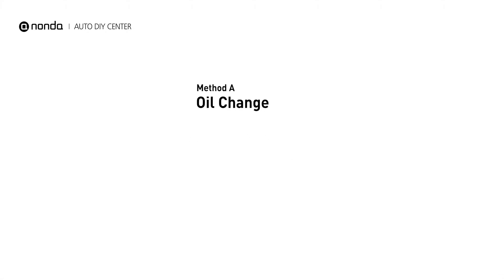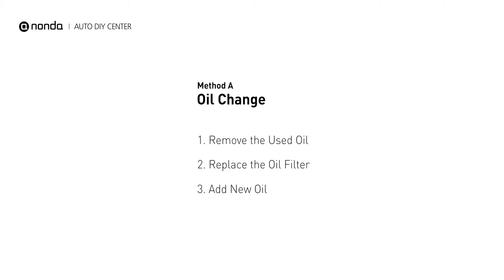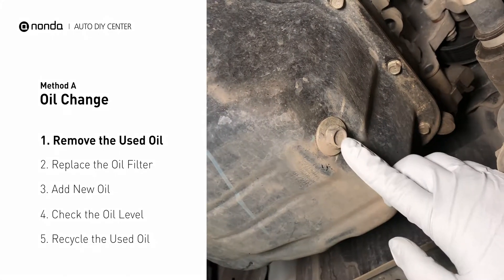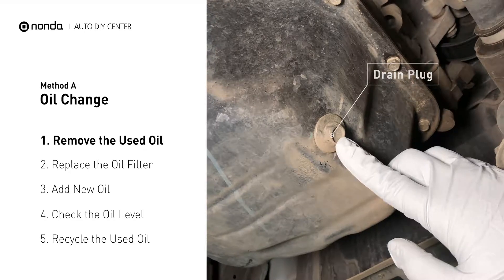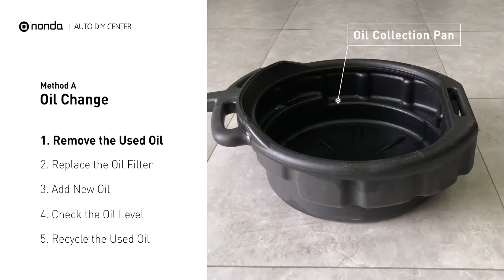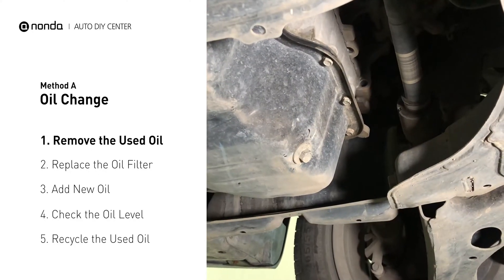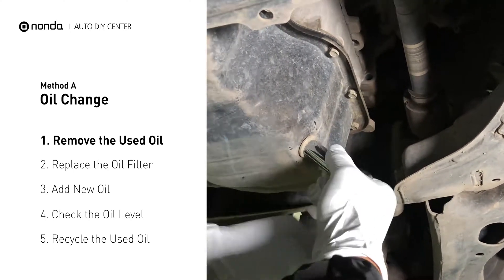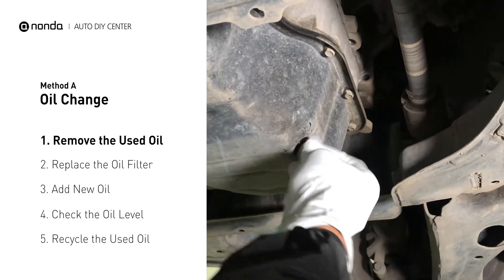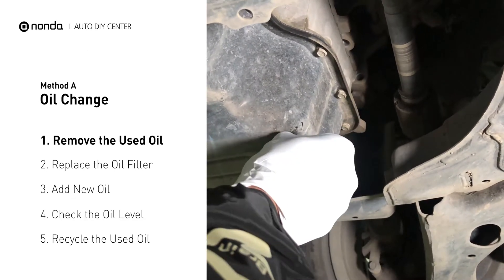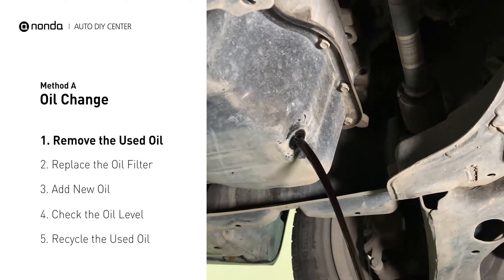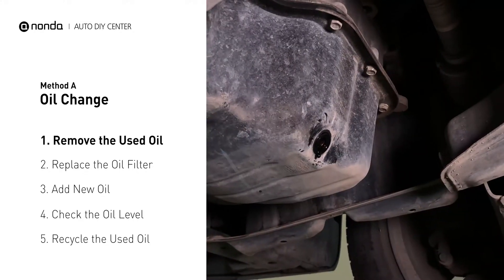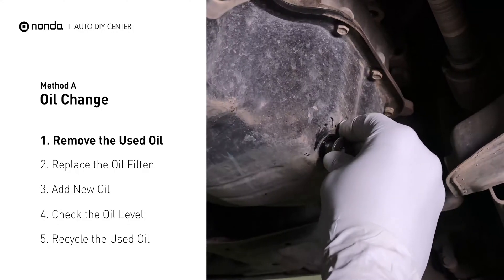Method A – Oil Change. Locate the oil drain plug on your vehicle and place an oil collection pan underneath it. Use a socket ratchet to remove the plug from the oil pan on your vehicle. Once the plug is removed, the oil should start flowing out into your collection pan. Once all the oil is drained, replace the drain plug and tighten it back on.